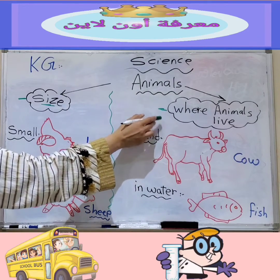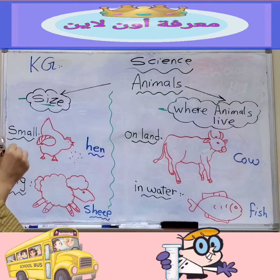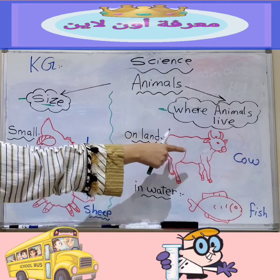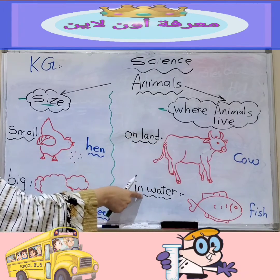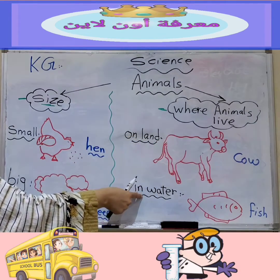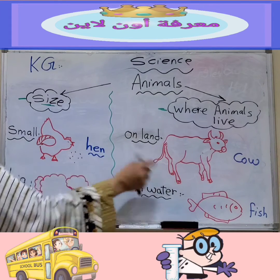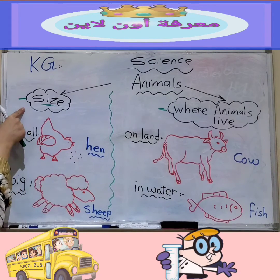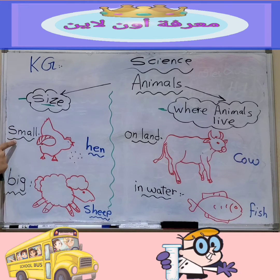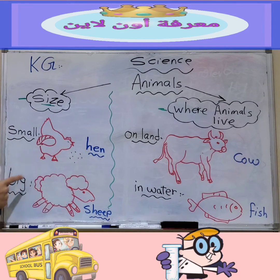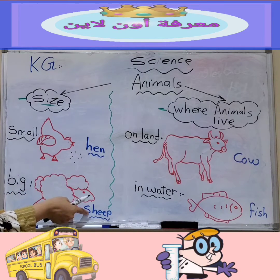So, where can animals live? Animals can live on land, like the cow. Animals can live in water, like the fish. What are the sizes of animals? Some animals are small, like the hen. Some animals are big, like the sheep.